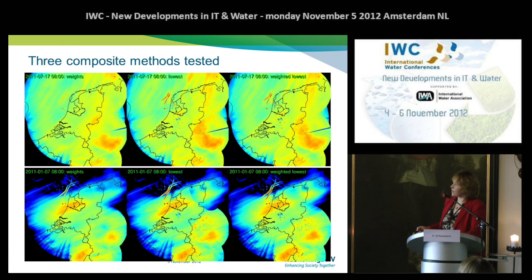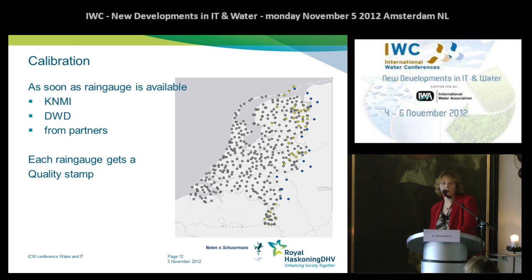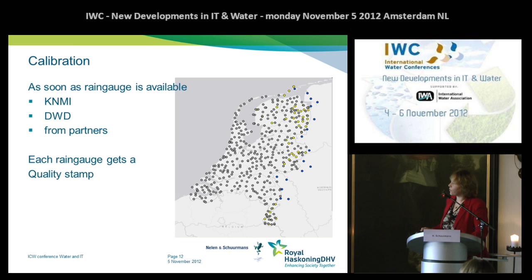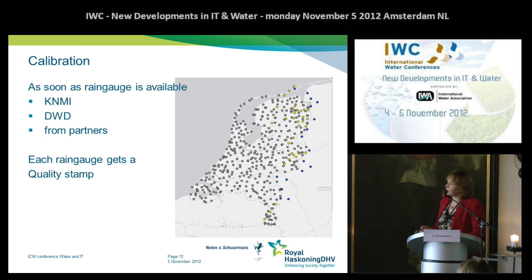We are choosing the best methods out of three to combine five different radar stations — this is one method, this and this — tested on different days. We now chose the last method. Then you have rainfall data purely from radar images. But you also measure rainfall at the ground with rain gauges. So as soon as a rain gauge is available, we calibrate the image from the radar. We do that with KNMI data — the gray points — DVD from the Deutsche Wetterdienst, the blue points, and from the research partners, the yellow ones. Each rain gauge gets a quality stamp.